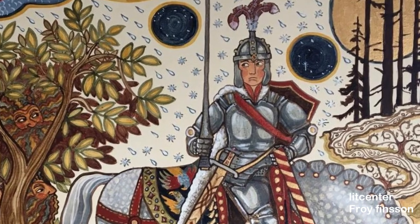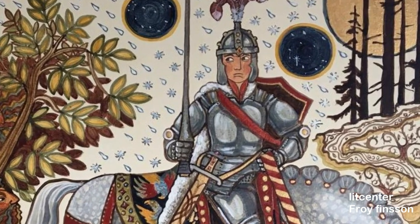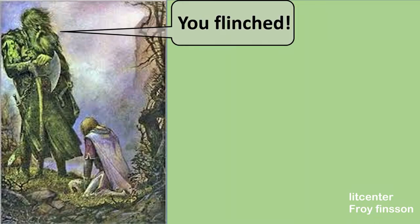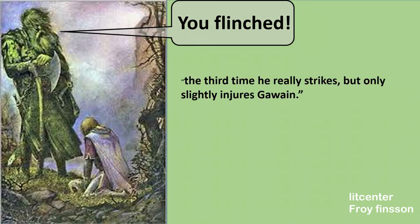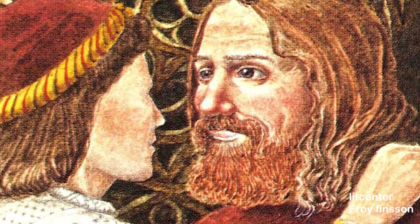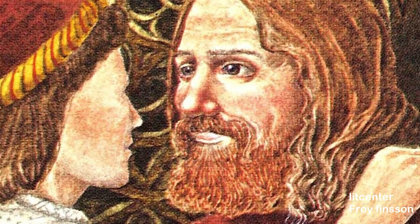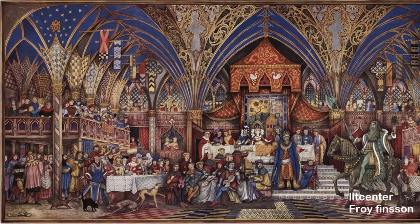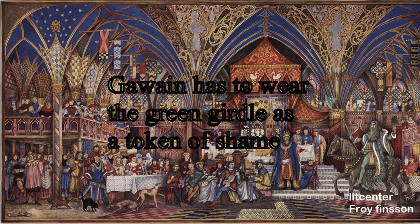The day of the meeting finally arrives, and Sir Gawain goes to the Green Chapel, where he finds the Green Knight waiting to deliver his blow. Two times the Green Knight holds back his blow, accusing Sir Gawain of flinching. The third time he really strikes, but just lightly injures Gawain. Then the Green Knight reveals himself to be Bertilak, and that everything had been planned to test Gawain's honor. Gawain has passed the test, but also failed a little, because he broke the bargain by not telling Bertilak about the girdle he had gained. Gawain has to wear the green girdle as a token of shame.